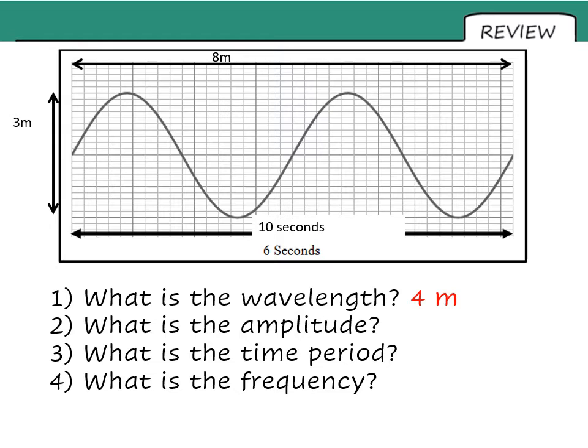The complete height of that wave is 3 metres. Amplitude is half the height, which is 1.5. This is happening in a 6 second period of time. So if there's two waves in 6 seconds, the time period for one wave would be 3 seconds. And the frequency then would be one third, one third of a hertz.